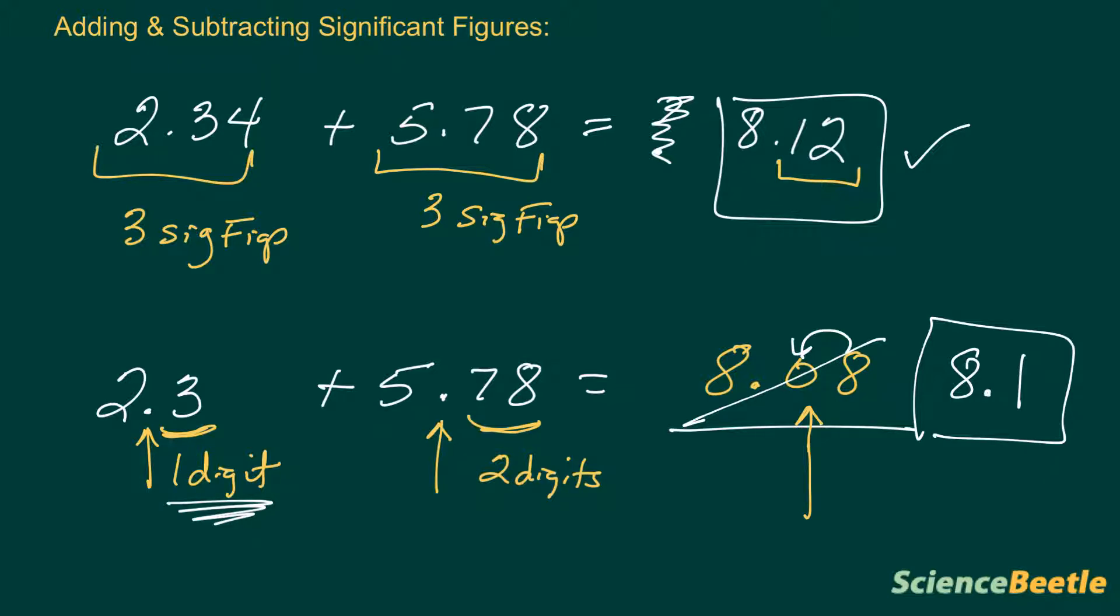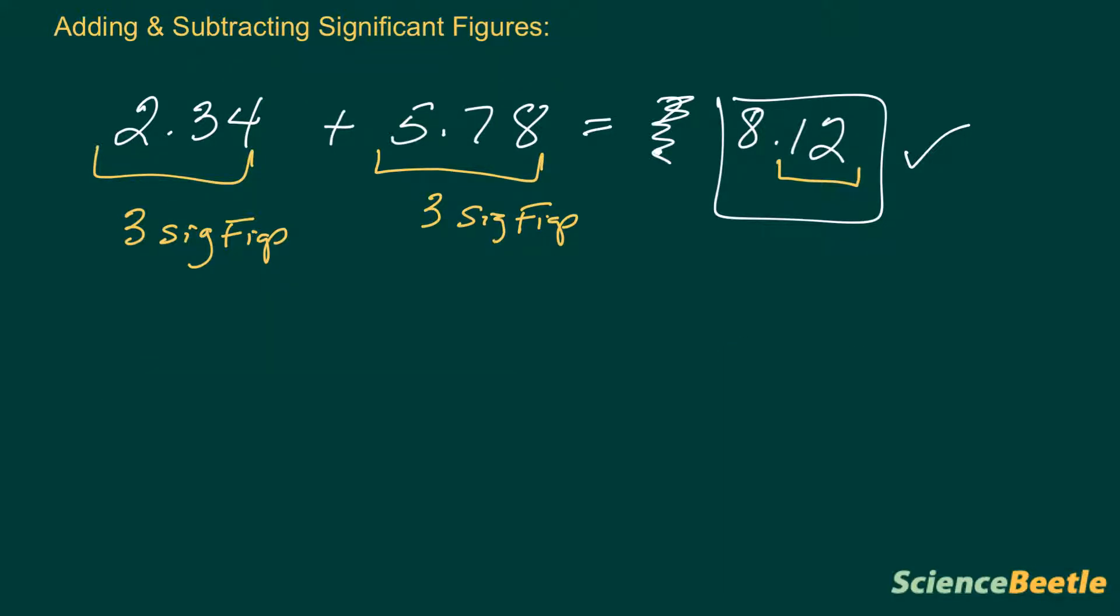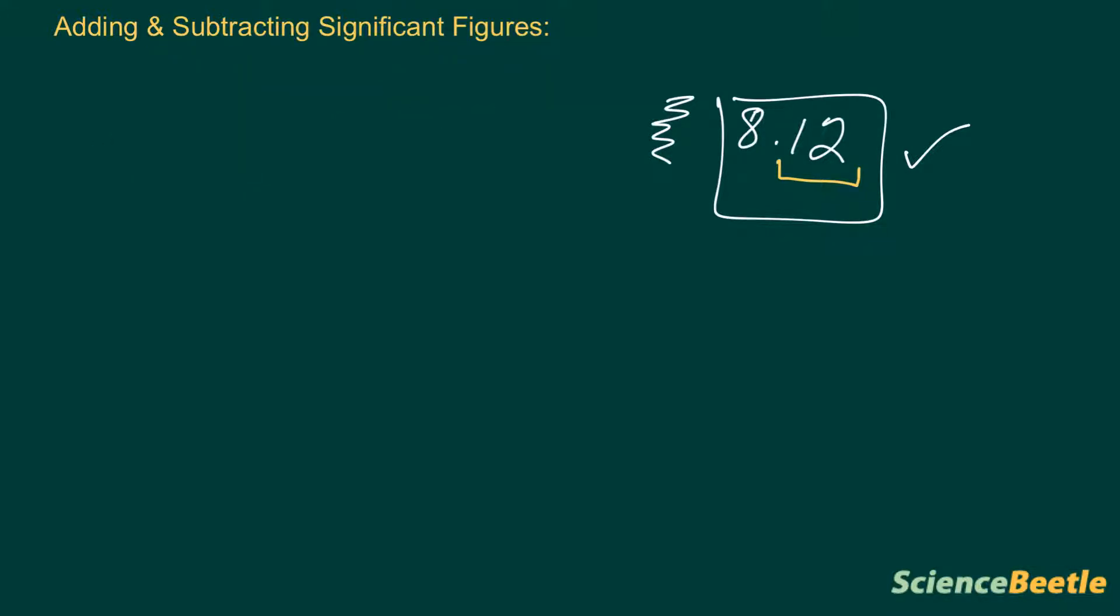All right. And so, this is the way you want to add numbers. Let me continue on and show you what happens if we subtract. It's going to be the same thing here, except you're just going to be subtracting, but still paying attention to how many digits come after the decimal. So, let's take a look at that. Let me erase some items here to make some room.